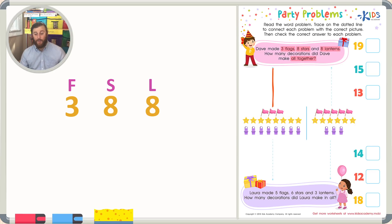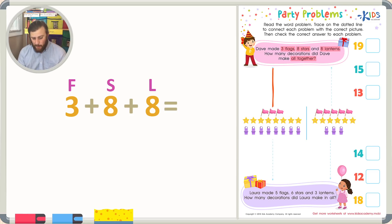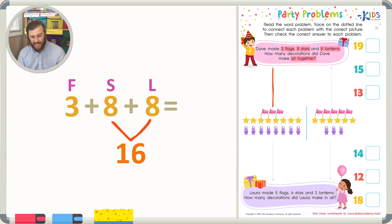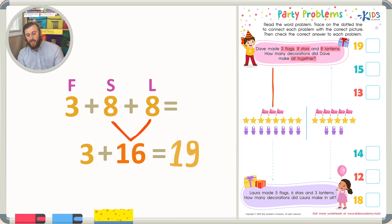The question asks how many decorations did Dave make all together. So we're going to have to add three plus eight plus eight to find out how many decorations Dave made in total. We can add in any order we want because the commutative property says so. Let's add the doubles fact of eight plus eight. I know that eight plus eight is sixteen. We can bring down what we have left over, which is three, making our new problem three plus sixteen. Counting on three from sixteen: seventeen, eighteen, nineteen. So three plus sixteen is nineteen — the total number of decorations that Dave made is nineteen.